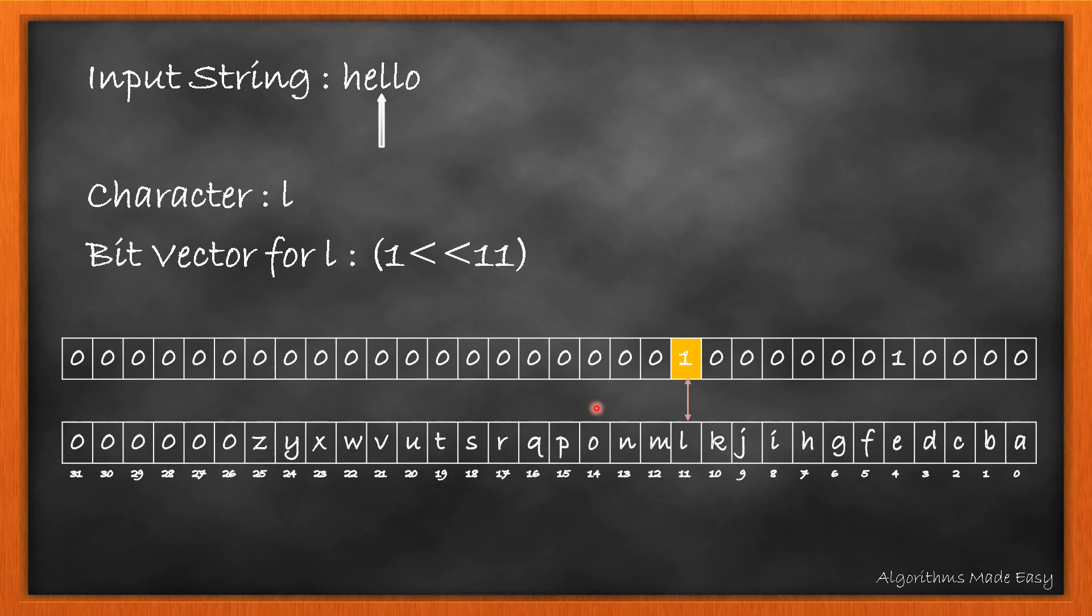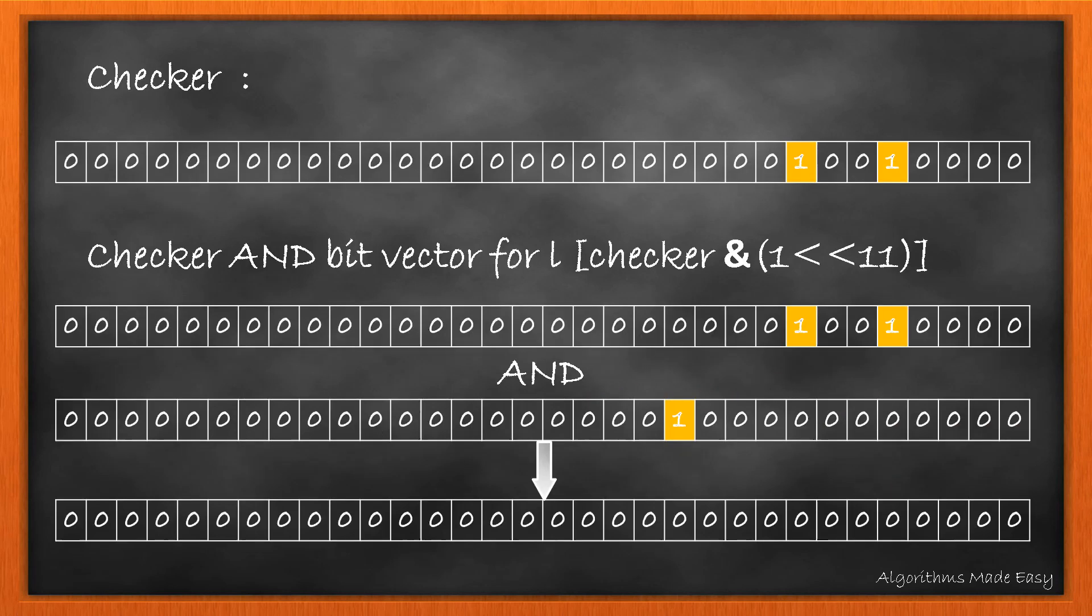Moving on to 'l', here is the bit vector. Again, the AND operation results to 0, which means it is not a duplicate. So, we will update the checker again.